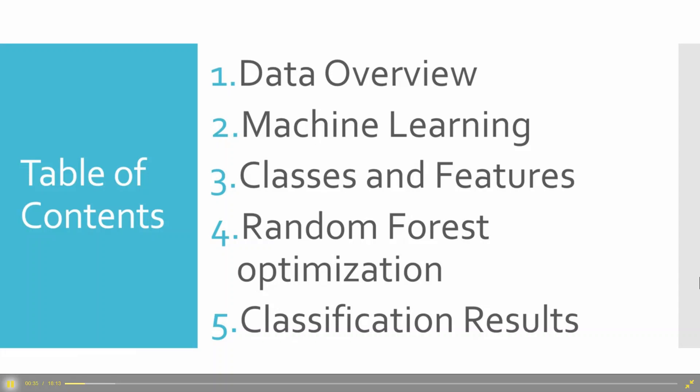I'm going to explain how to use a random forest properly and the things a random forest algorithm can tell you about your data. Random forest is extremely useful — it's used in a couple of LiDAR papers to do classification. It's often used as a black box to get the best accuracy, but there's really a lot under the hood that you can do to make your results more accurate and get more information out of your data. Then we'll talk about classification results.